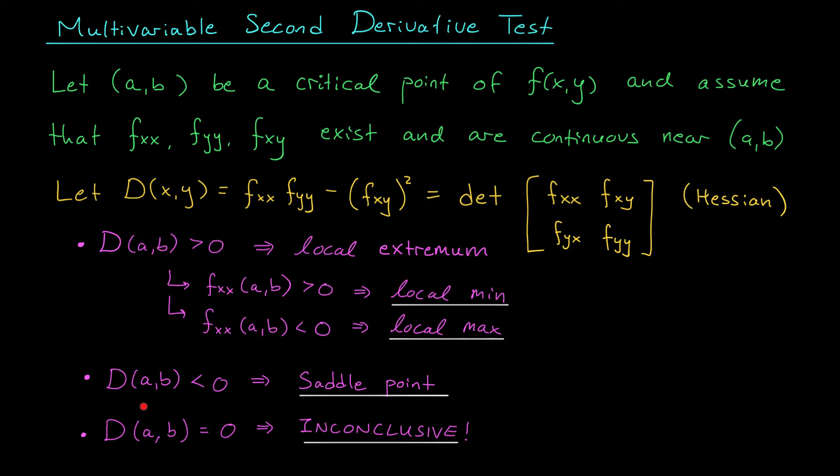If instead, d(a,b) is negative, well, then you got yourself a saddle point. If you don't remember this term, check out our last video. Essentially though, it's a critical point of a multivariable function that's neither a maximum nor a minimum.